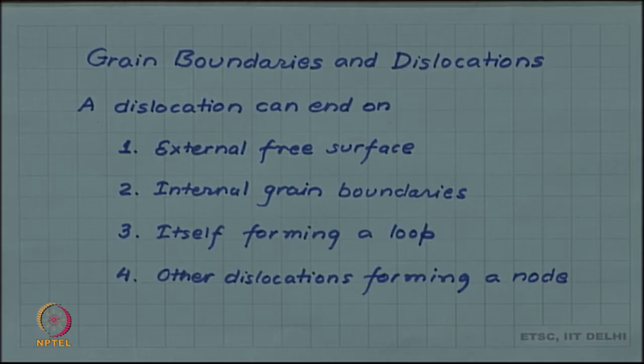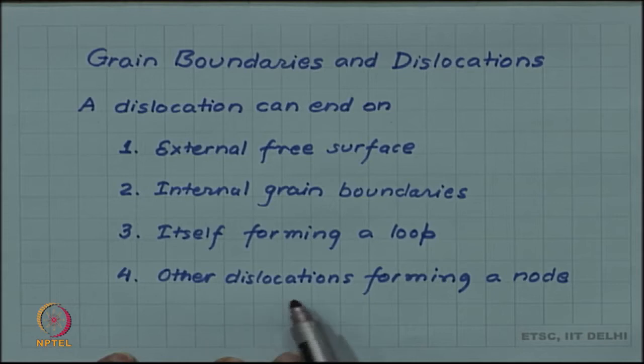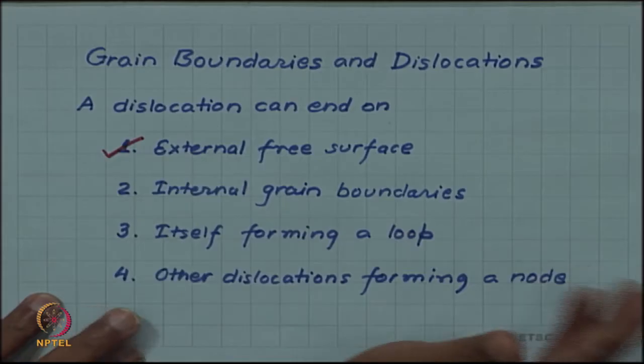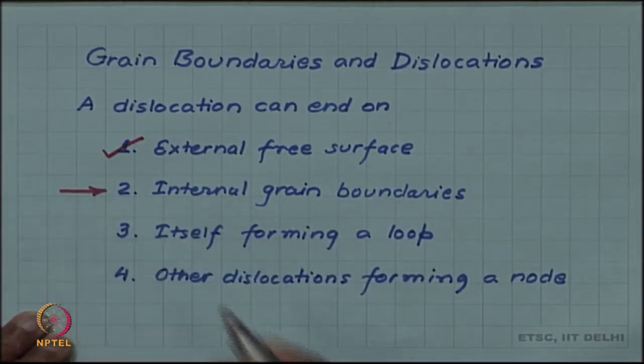We will discuss grain boundaries and dislocations. In the last video we saw that a dislocation line cannot end abruptly inside a crystal, but it can do one of these things: it can end on an external free surface, or it can end on an internal grain boundary, or it can end on itself forming a loop, or it can end on other dislocations forming a node. We have already discussed the external free surface; we should now look at how it can end on internal grain boundaries.